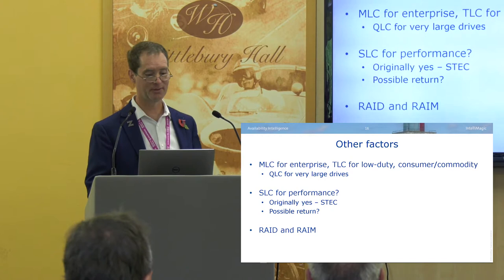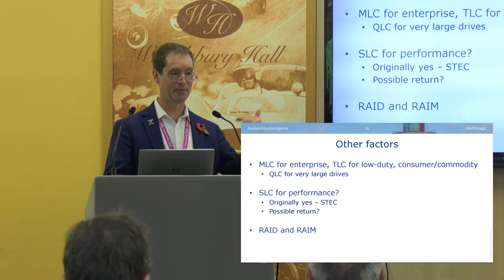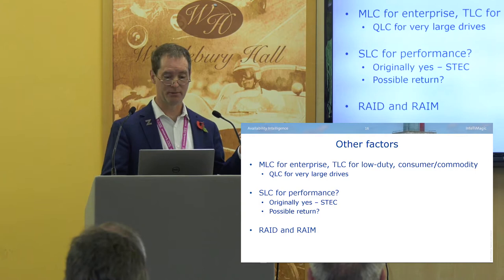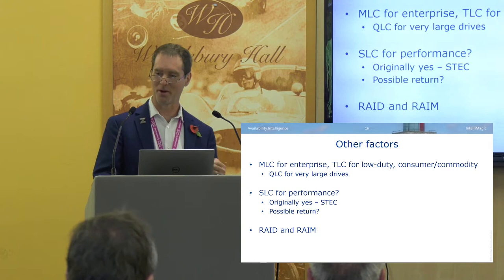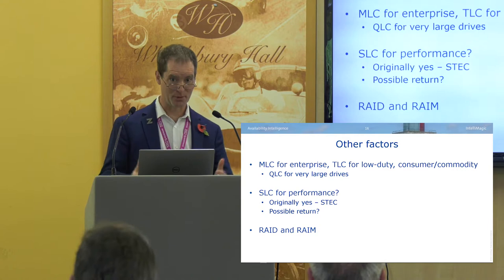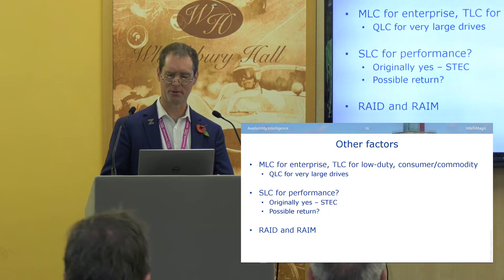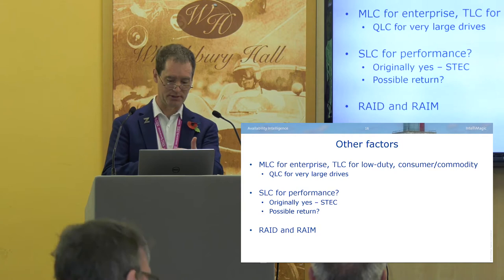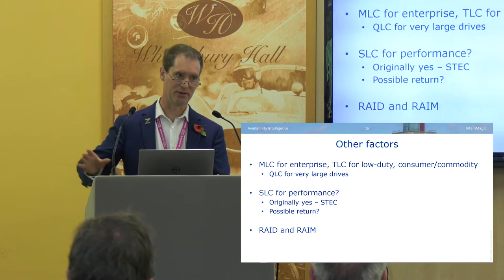MLC for enterprise, triple-level cell for very high density - a 10 or 20 terabyte drive is very likely going to be triple-level cell to achieve that density. Single-level cell may still be used for performance tiers. Back in 2008 there was a company called Estek that was the sole supplier of enterprise flash drives to EMC - that stock would have been great to own then. Intel and everybody else makes them now. We're going to have tiers of flash in the future, just as today we have 7,200, 10K, 15K, and then flash. And RAID, of course.